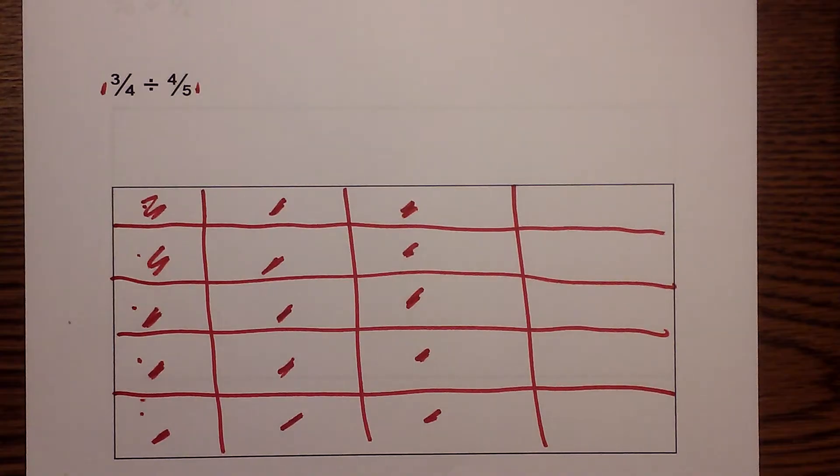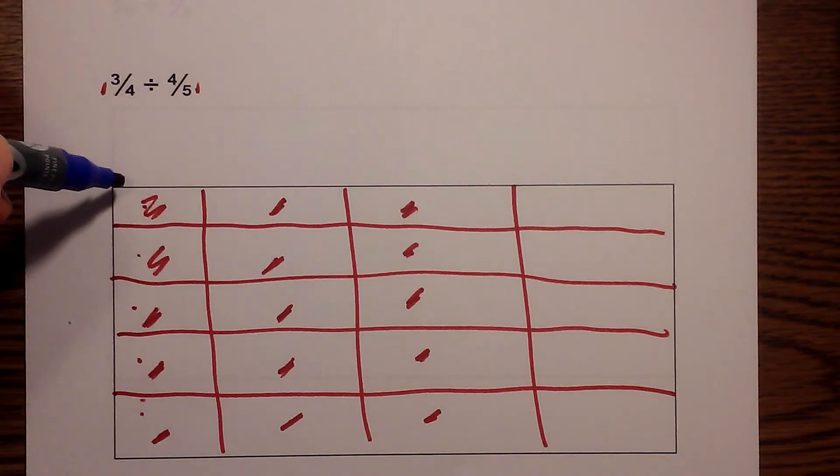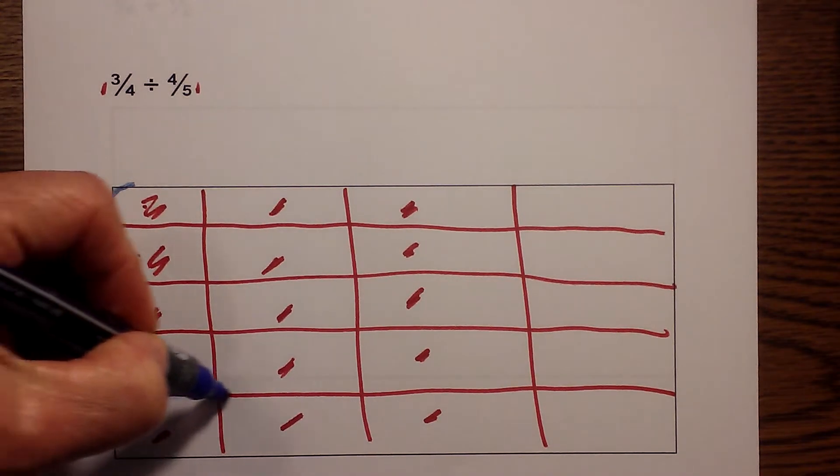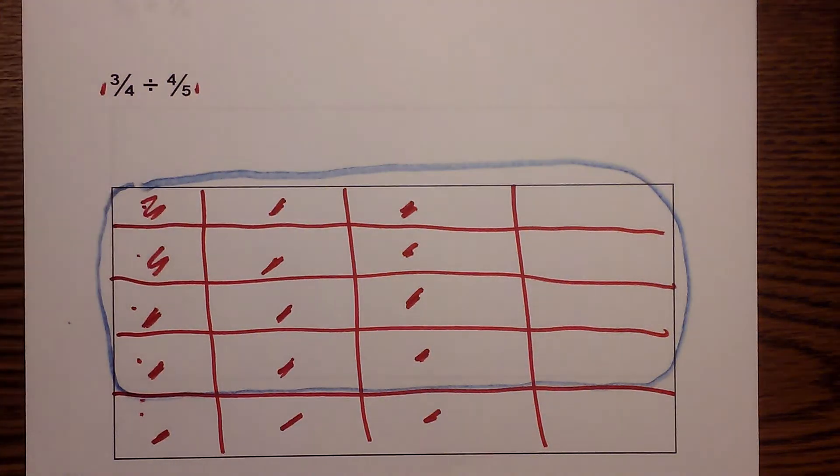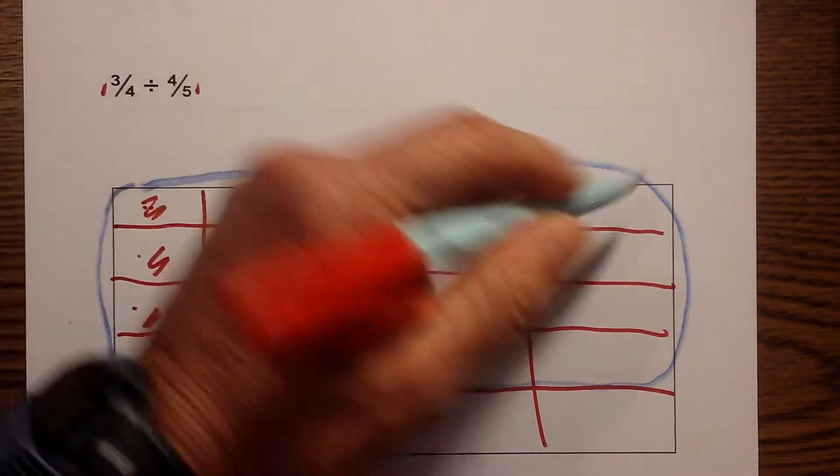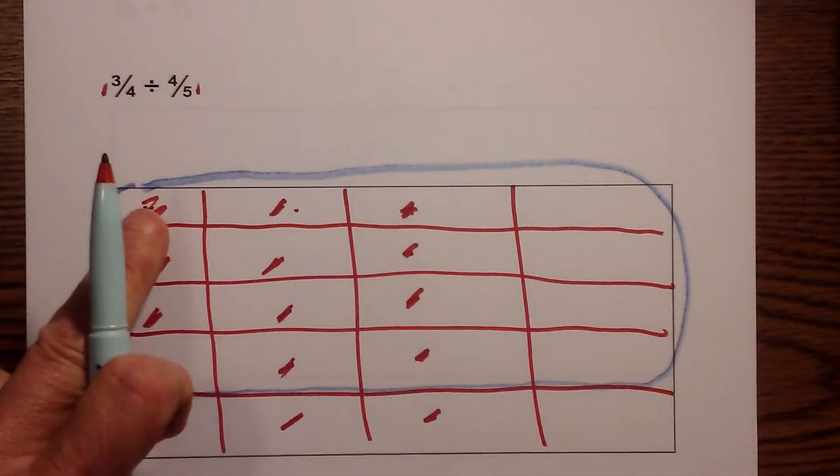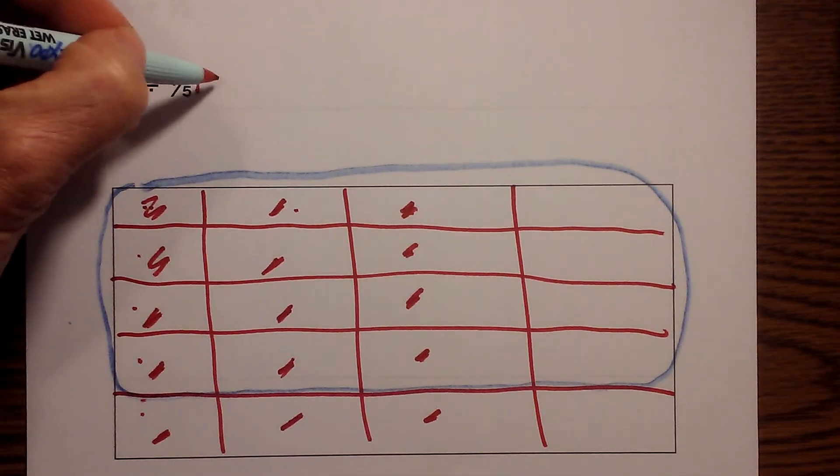And now for the divisor I will circle the number of rows. So I have 4 out of the 5 so I will circle 4 out of the 5. So now what I have done is I have 3 out of the 4, 1, 2, 3 out of the 4 vertical columns and 4 out of the 5 horizontal. So now I count.